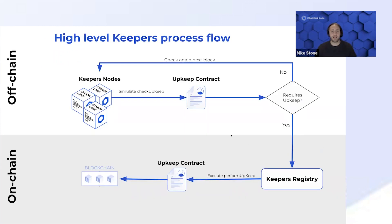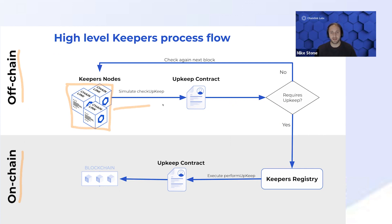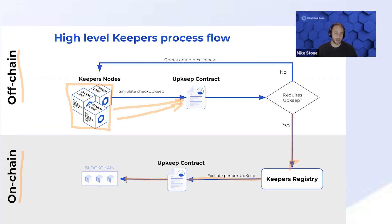Looking at the high-level process flow for Keepers, you'll notice it's separated into two parts: work happening on-chain and work happening off-chain. The Keepers nodes are constantly checking your contract — specifically calling the checkUpkeep function. As soon as work should happen, the Keepers nodes send a message to the Keepers Registry, which is a contract that lives on-chain. That registry then relays a message to your contract, specifically calling the performUpkeep function, which results in a transaction on-chain.